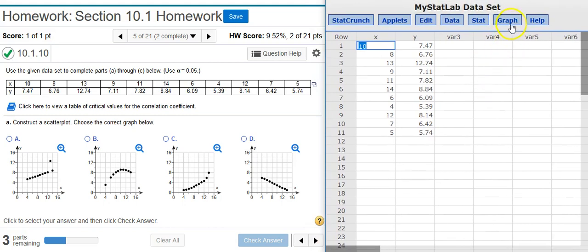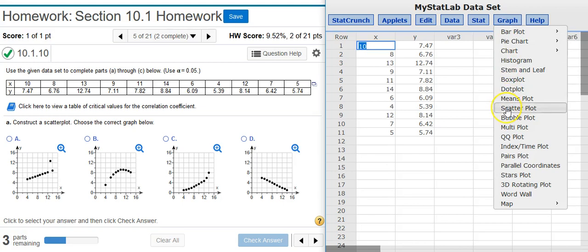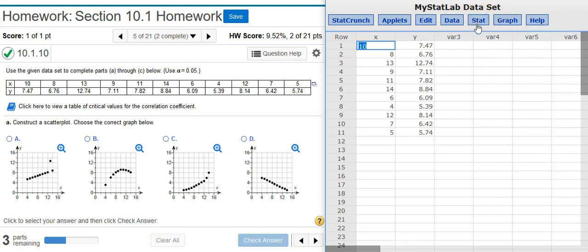Now inside StatCrunch I could go to graph and then select scatter plot, but I know from the problem I'm going to have to do a regression analysis anyway and the scatter plot comes as part of the regression analysis so let's just do that. It's less buttons to push.